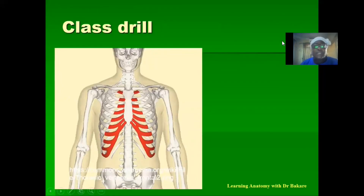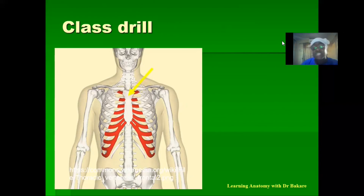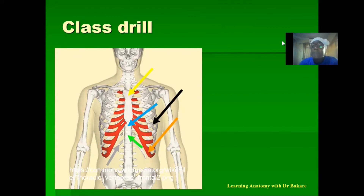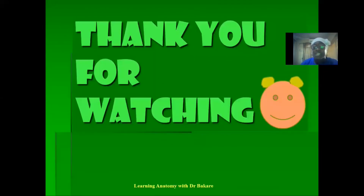Let's look at this class drill. Arrows will be pointing to different regions of the thoracic cage and you will be expected to identify the names of these structures. You should be able to identify the specific region of the sternum the arrow is pointing to, the distal region of the sternum, the structure highlighted in red, the posterior region of the thoracic cage, and classify the type of rib shown. Thanks for watching — see you next time.